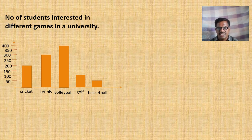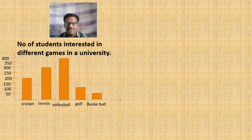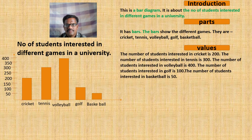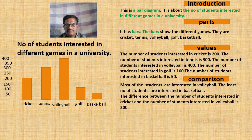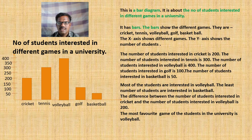As a part of conclusion, the children may come out with their own opinions. One of the opinions may be like this: 'The most favorite game of students in the university is volleyball.' If we bring all the points together we can have the full paragraph. After removing the subheadings, the final draft may appear like this.